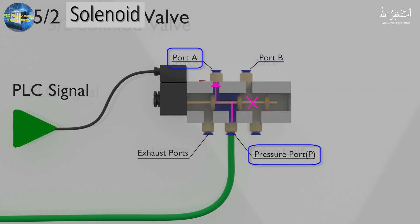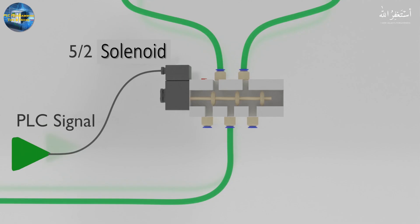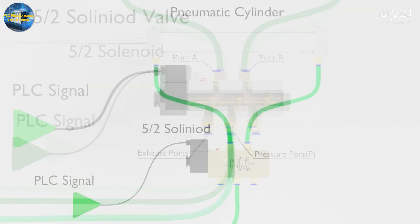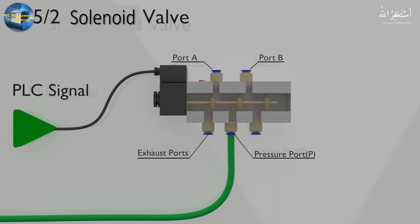When port P is linked to port A, the spool blocks the entry of air towards port B. Similarly, when port P is linked with port B, the spool blocks the entry of air towards port A. The spool moves when the solenoid coil is energized by a signal coming from the PLC. There are also exhaust ports in the solenoid valve, which we will discuss shortly.